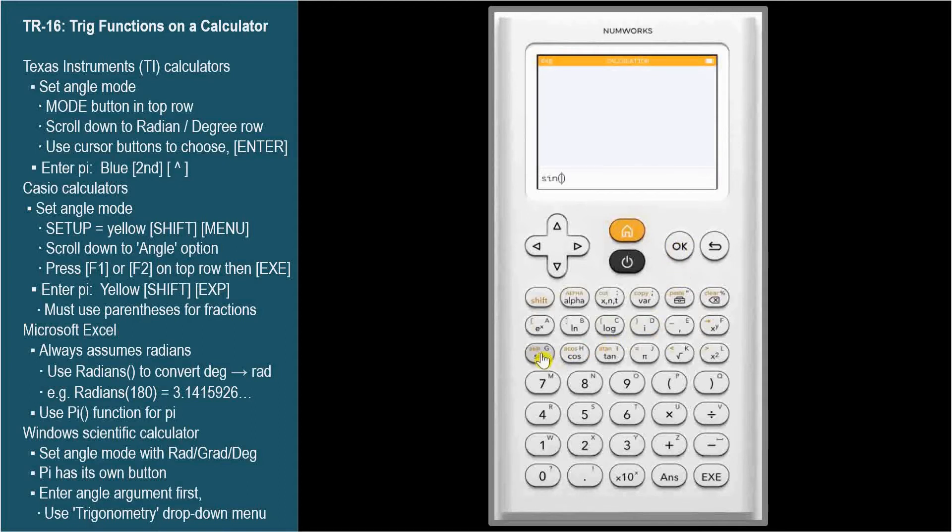We'll start again with sine 30 degrees. When we press sine, we get a set of parenthesis, so we type 30 and execute. NumWorks shows the answer as a fraction and as a decimal value. Nice.